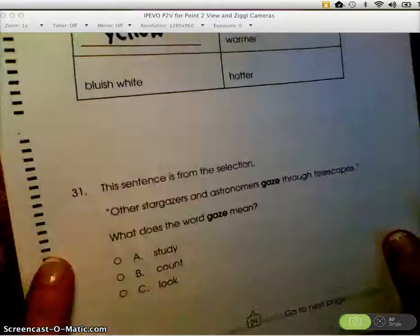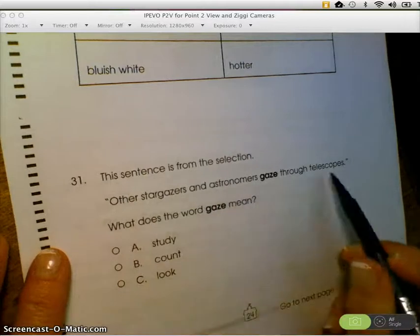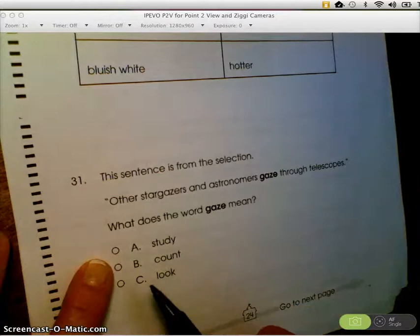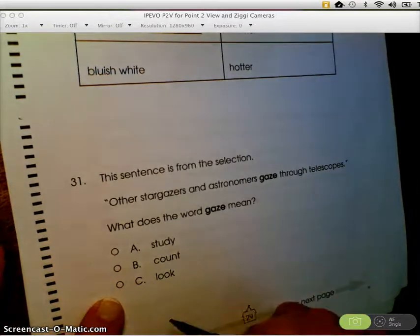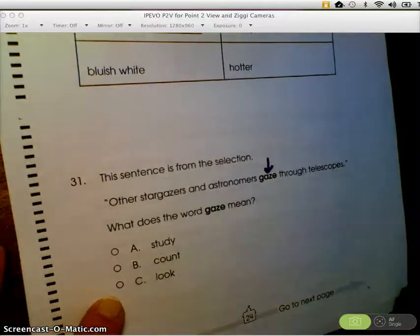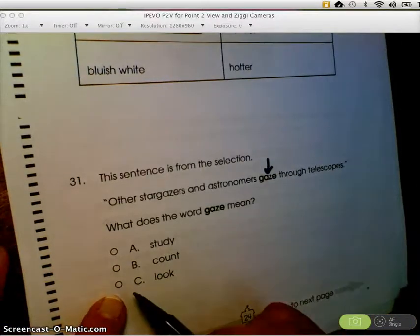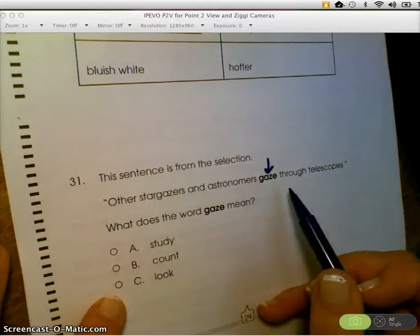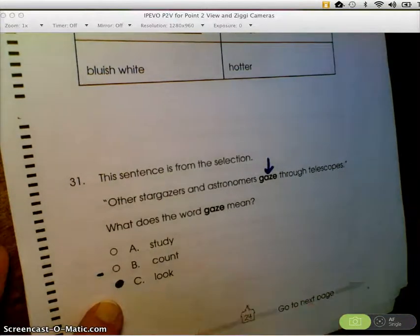And then finally, this sentence is from the selection. Other stargazers and astronomers gaze through telescopes. What does the word gaze mean? Does it mean they study through telescopes, they count through telescopes, or they look through telescopes? Did you see how I plugged each word in in the place of gaze to make sure it made sense? And when I plug it in, the only one that really works is look through telescopes, because stargazers do study, but they don't study through telescopes, so that doesn't work. Count is a dud, and look is my best choice.